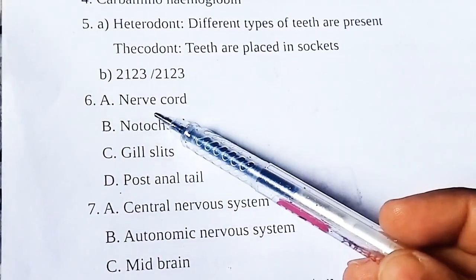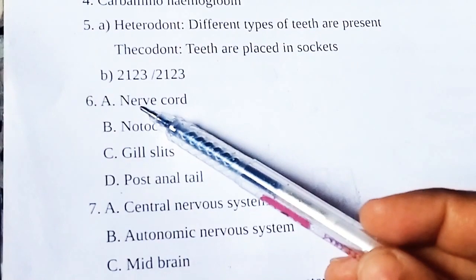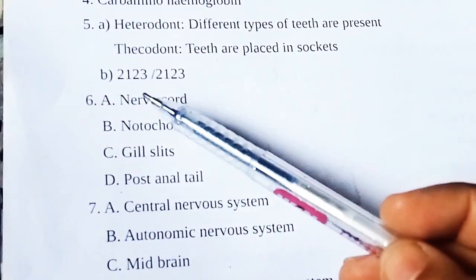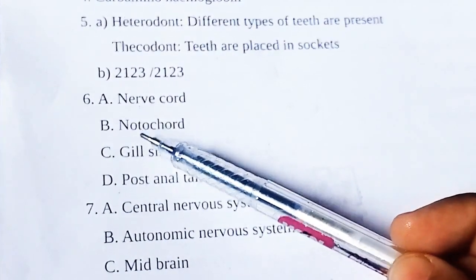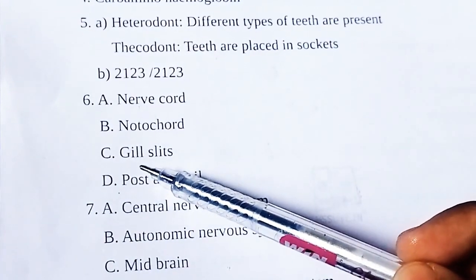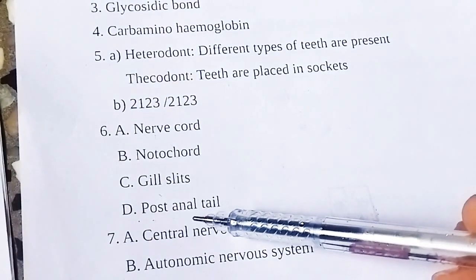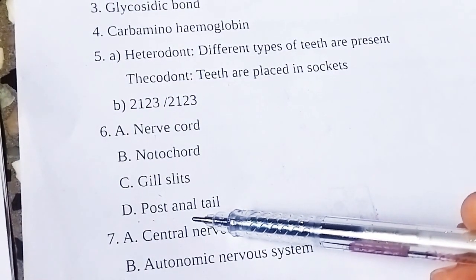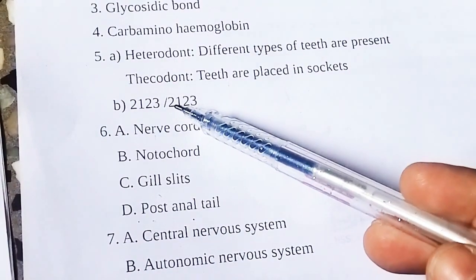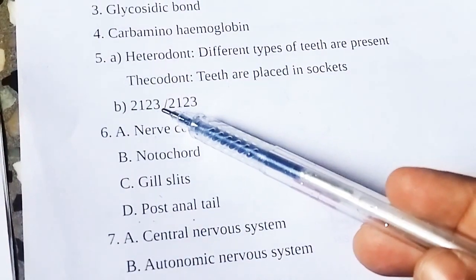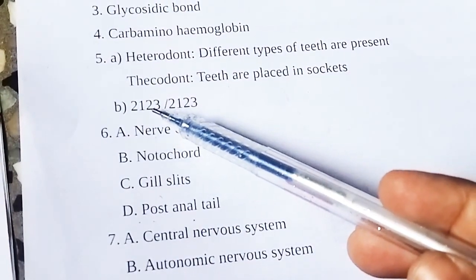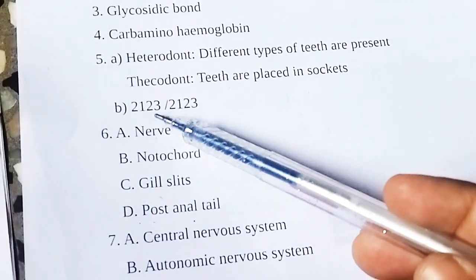A is nerve cord, B is notochord, C is gill slits, D is post-anal tail. The dental formula is 2, 1, 2, 3 over 2, 1, 2, 3.